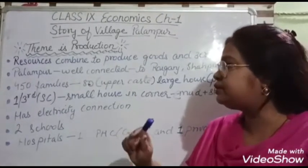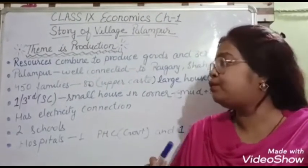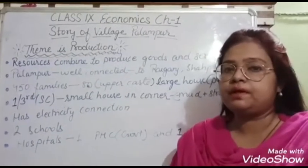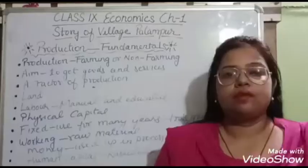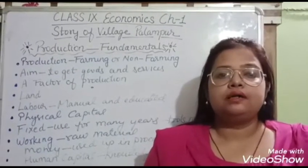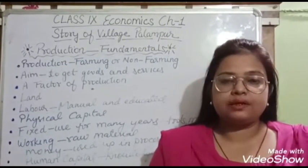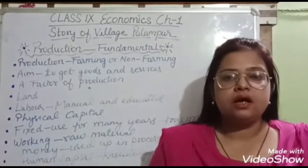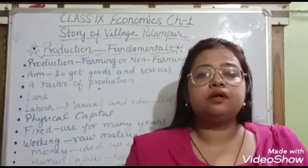So schools, electricity resources, and other facilities are all present in the village. The population of 450 families includes both upper and lower caste people. These are the themes of production — what is happening in the village. In the first part, I told you the criteria, the things, and the resources present within the village, how it is a fully sustainable and independent village. The first theme was production.